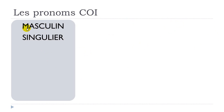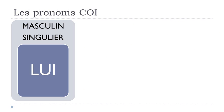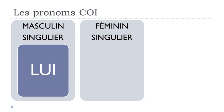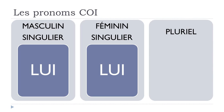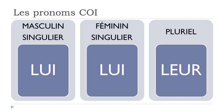We'll start with the masculine singular form, which will be lui. Féminin singulier — the feminine singular form is also lui. So it's easy to memorize because it's the same form for masculine and feminine. And then for the plural form, the third person of the plural, it will be leur. So: masculine singular — lui; feminine singular — lui; plural third person — leur.